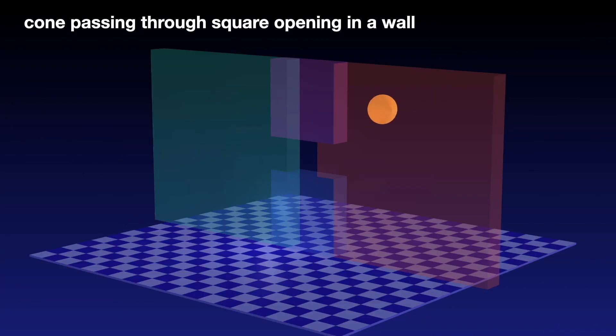A third example is making a cone pass through a tight opening in a wall, where both translational and rotational control are required to make the cone fit through the opening.